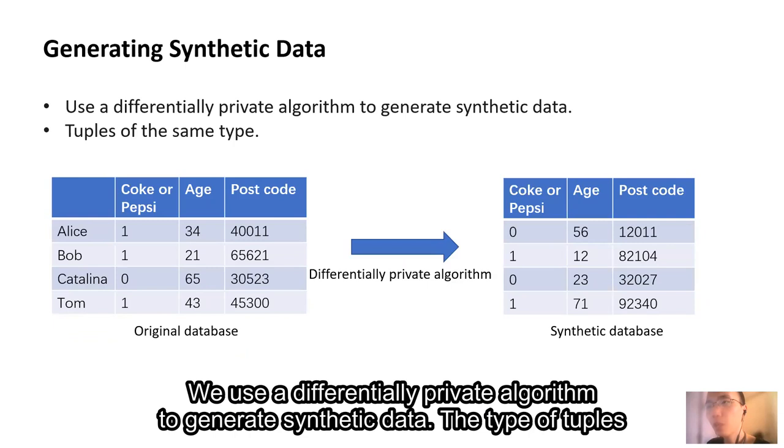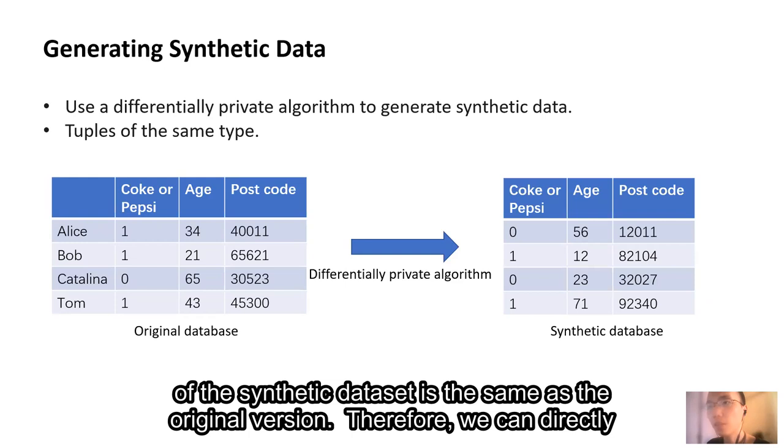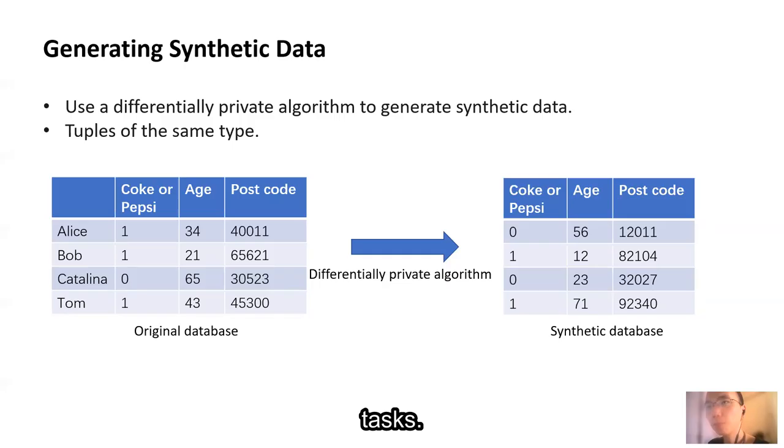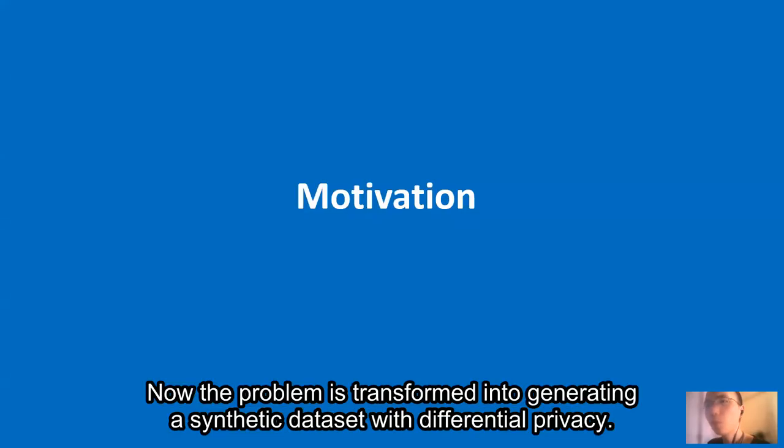We use a differentially private algorithm to generate synthetic data. The type of tuple of the synthetic dataset is the same as the original version. Therefore, we can directly publish the synthetic dataset for others to use. We can even use it to perform data mining tasks. Now, the problem is transformed into generating a synthetic dataset with differential privacy.